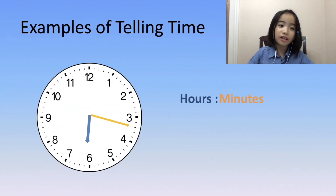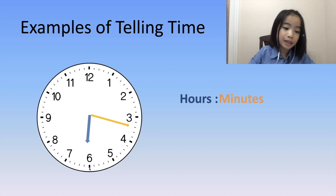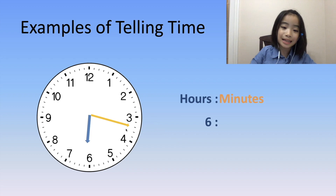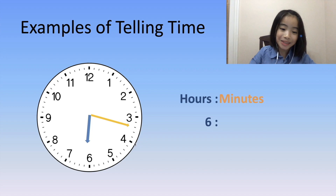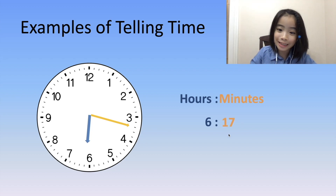Now, let's do another example. First, let's look at the hour hand. The hour hand is pointing between 6 and 7. According to the rule, it is 6 o'clock. Now, let's look at the minute hand. The minute hand is pointing between 15 and 20 minutes. So here is 16 minutes and 17 minutes. So we have 17 minutes. The time is 6:17.